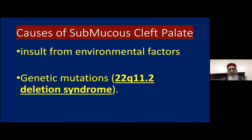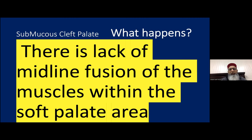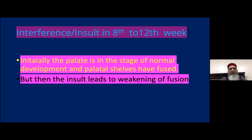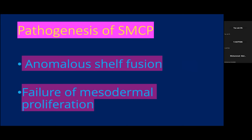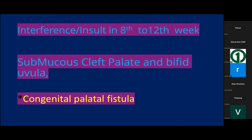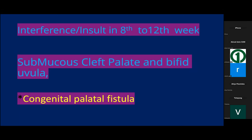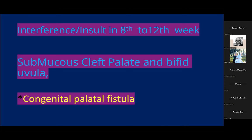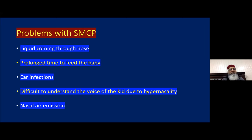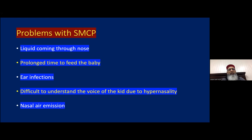There are insults from environmental factors and possible genetic mutations responsible for submucous cleft palate. There is a lack of midline fusion of the muscle cells within the soft palate area whenever there is interference during the 8th to 12th week of development. The palate is in normal development — the palatal shells have fused — but the insult leads to weakening of fusion, anomalous shell fusion, or failure of mesodermal proliferation, resulting in submucous cleft palate, bifid uvula, and sometimes congenital palatal fistula.